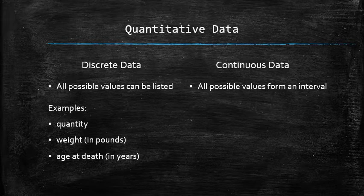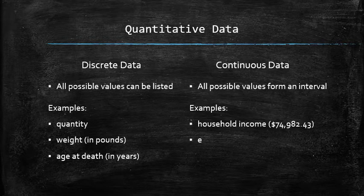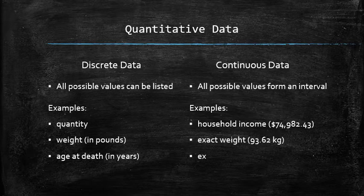Note that discrete data doesn't mean that the list must be finite. On the other hand, the exact incomes, weights or heights, and time are some examples of continuous type.